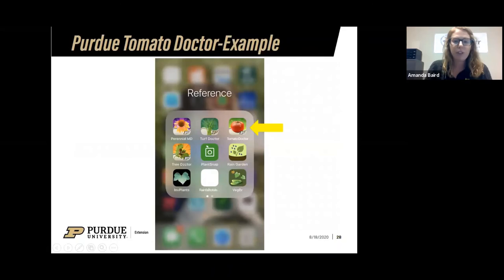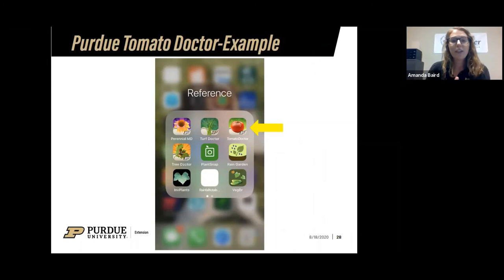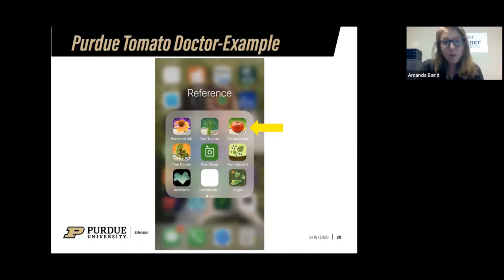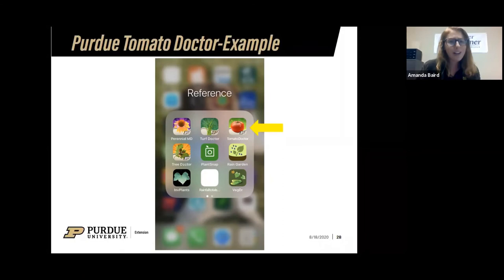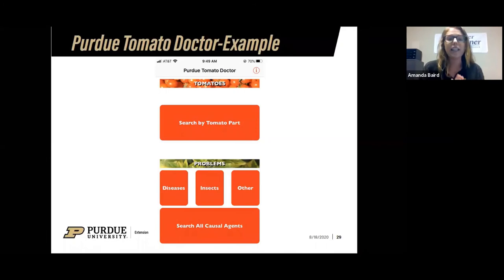Let's walk through an example. The photo here shows what the main app looks like. On your cell phone, look for the tomato icon with the Purdue logo — it says 'Tomato Doctor.' There are also other Purdue apps: Turf Doctor for lawn issues, a Perennial Doctor for flower issues, and a Tree Doctor. You can get all four apps for less than five dollars.